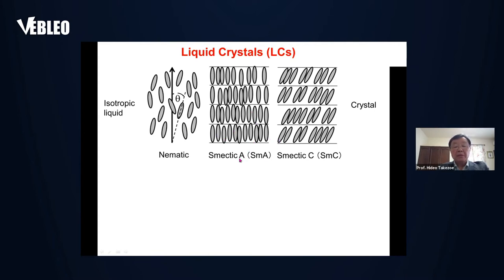In smectic A, the molecule is perpendicular to the layer, and smectic C is the tilted version of smectic A.